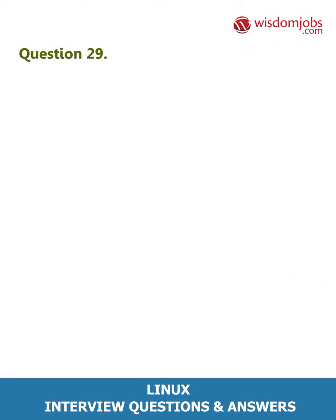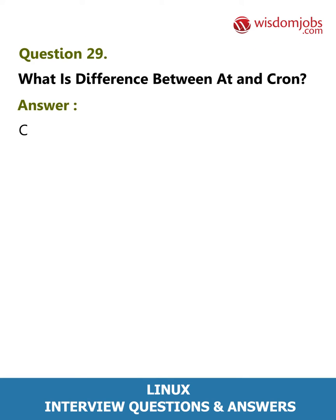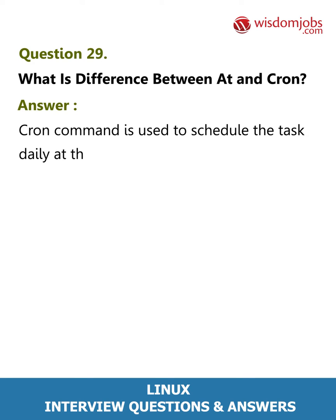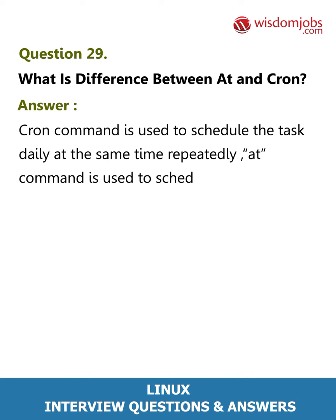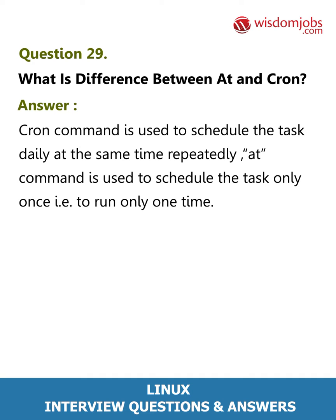Question 29: What is the difference between at and cron? Answer: The cron command is used to schedule a task daily at the same time, repeatedly. The at command is used to schedule a task only once — i.e., to run only one time.